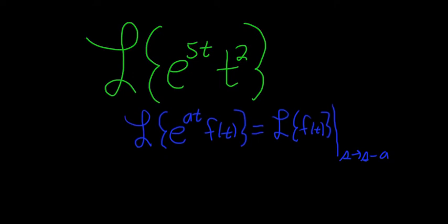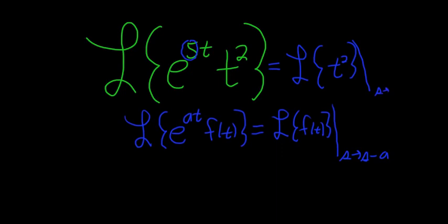So in this case, your a is 5. Using our formula, this is equal to the Laplace of t squared, and the shift is from s to s minus 5.